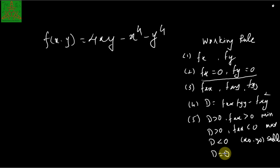If D is negative, then the point (x₀, y₀) where fx and fy are zero is called a saddle point. And if D equals zero, we cannot conclude whether the function has a minimum or maximum at that point — we cannot draw any conclusion. These are the working rules to calculate the maximum and minimum of the function.